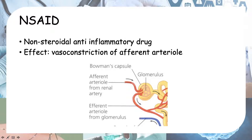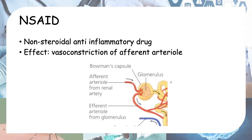This is your glomerulus, which is part of the nephron. Your kidneys are made of about one million nephrons — the smallest functional parts of your kidneys. Blood flows into the kidneys through the afferent arteriole, gets filtered in the glomerulus, and exits through the efferent arteriole. Whatever comes in must come out one way or the other.